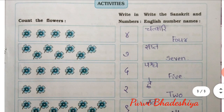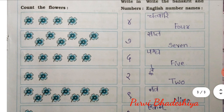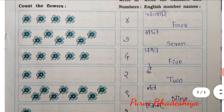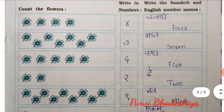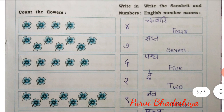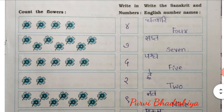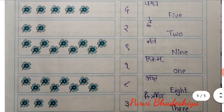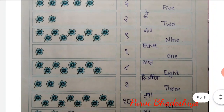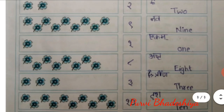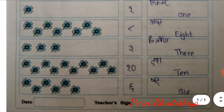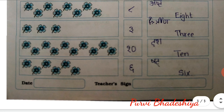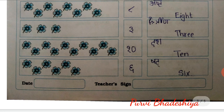Now this is the activity in which you have to count the flowers and you have to give the number name and in words. So 4 — Chathwari. Sapt means 7. Punch — 5. 3. 2. Now 9. And Ast — 8. Trini — 3. Das — 10. Shatter — 6.